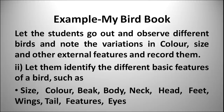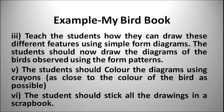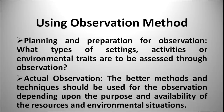For example, the bird book activity: let students go out and observe different birds, noting the variation in colors, sizes, and other external features. Let them identify basic features such as size, color, beak, body, neck, head, feet, wings, tails, feathers, eyes, and nose. Teach students how to draw these different features using simple diagrams, color them using crayons as close to the actual bird color as possible, and stick all drawings in a scrapbook.